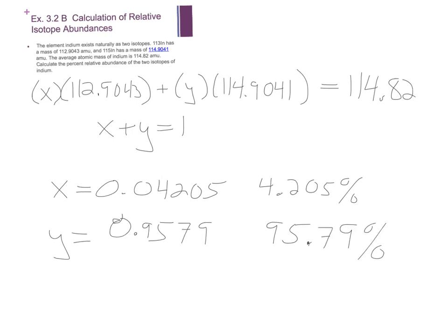So sig figs, it's kind of silly the way it adds up, but this is what you get. And x was related to isotope 113, so that's going to be indium 113, and then y was related to indium 115.